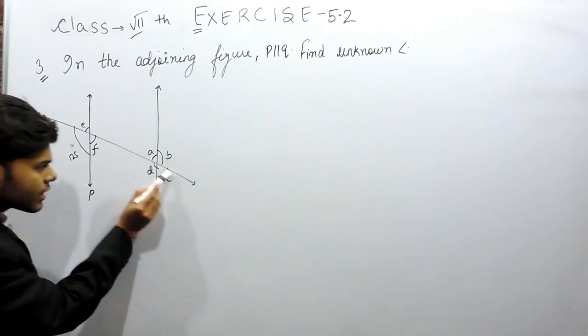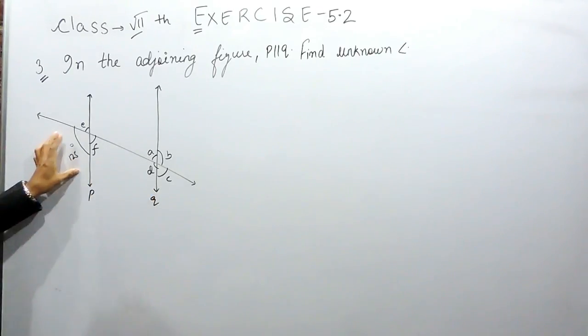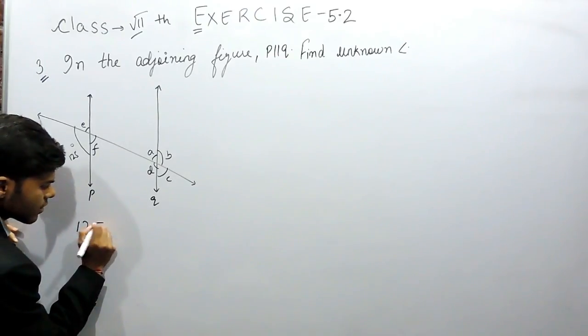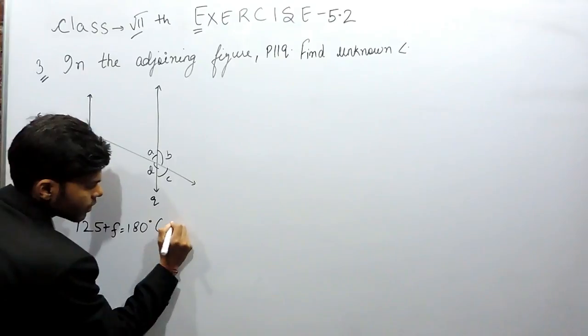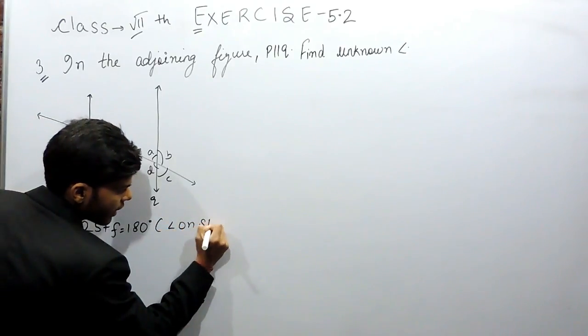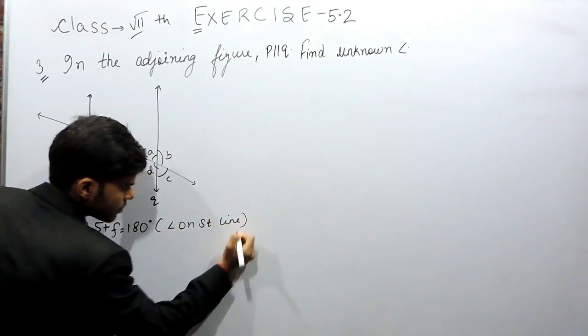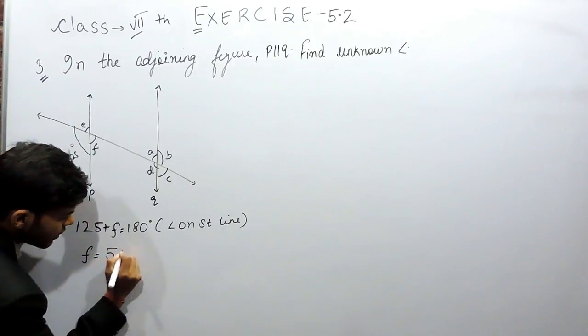The first thing that we can do is, this is a straight line. Sum of angles on a straight line should be equal to 180 degrees. That is, 125 plus F equals 180 degrees, angle on straight line. So F will be equal to 55 degrees.